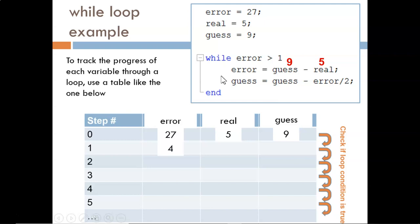Key point, the previous values of these variables are overwritten by their new values. So, error equals 4, and there is no memory it ever equaled 27. In the table, it is the lowest values that are used in our calculations.